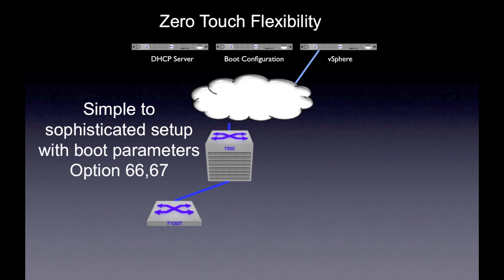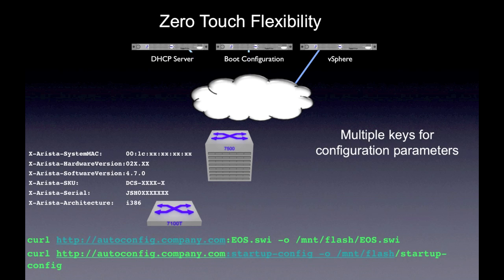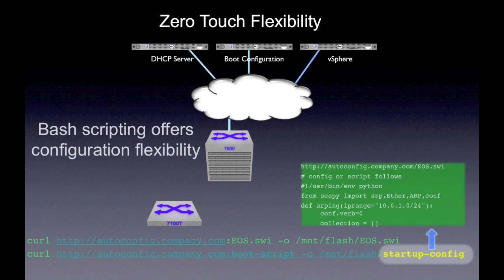ZTP uses standard DHCP services for its configuration and image download. Additionally, ZTP supports DHCP option 67, so configuration downloads can be indexed to MAC ID, serial number, model name, hardware, or software version parameters. Arista's EOS also supports Linux scripts downloaded through ZTP, which lets managers support dynamic configuration capabilities on the platforms for complex network deployments.